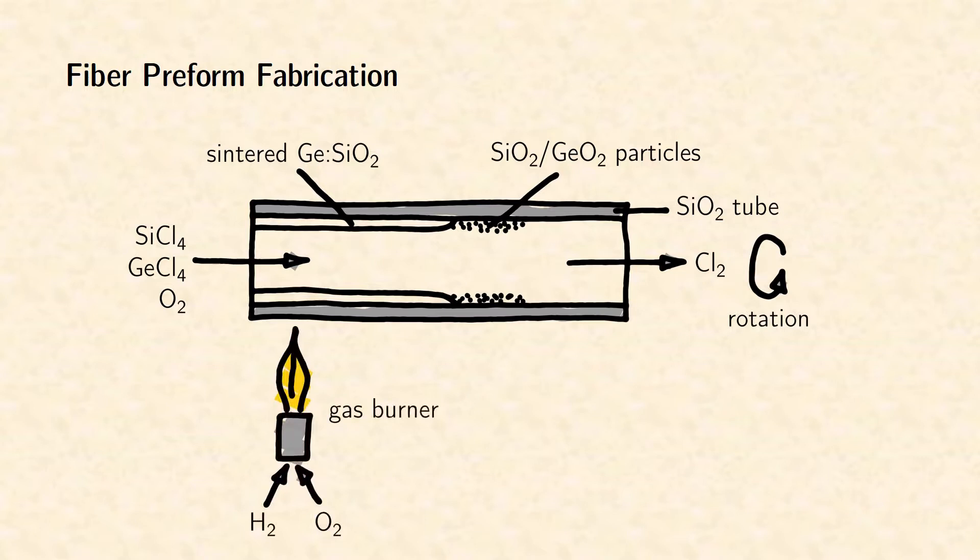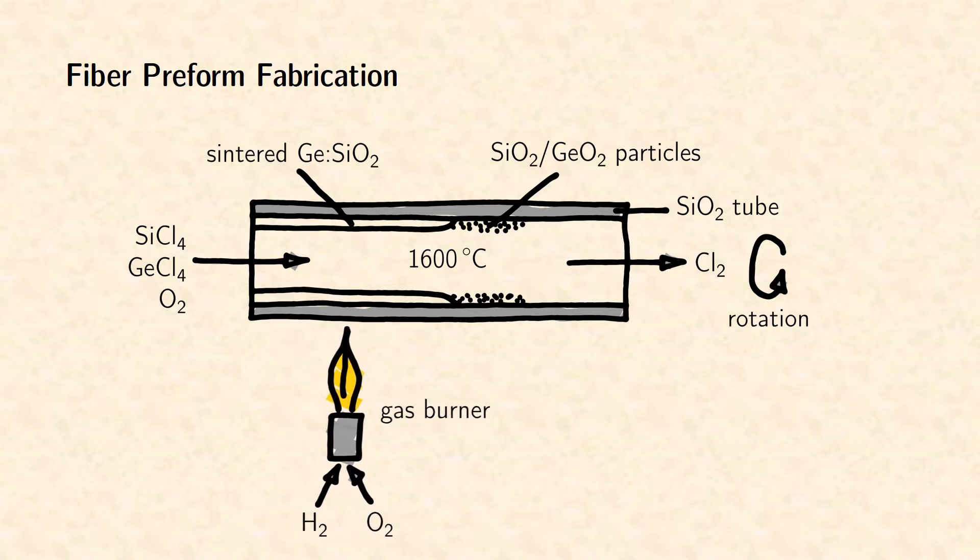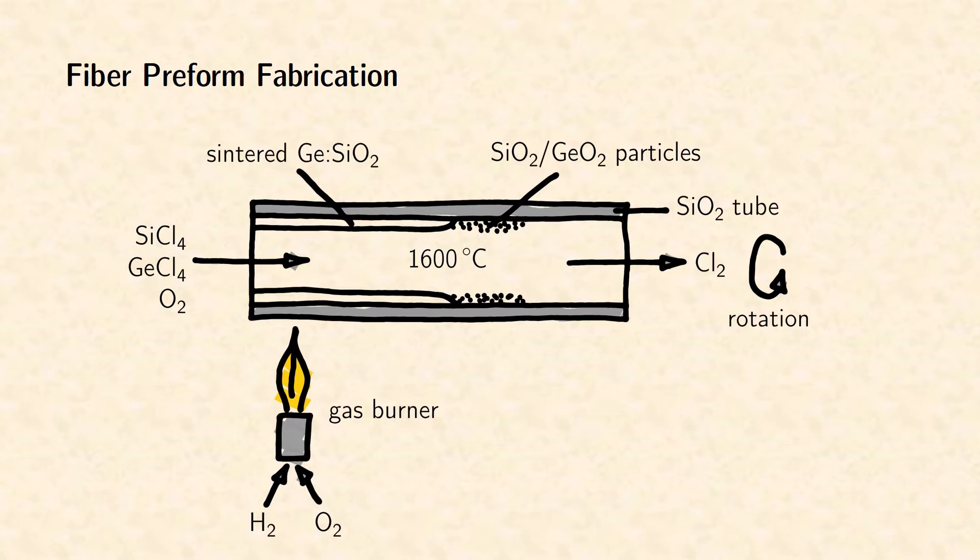A gas burner is moving forward and backward along the tube. It heats the gas to about 1600 degrees C. At this temperature, the oxygen reacts with the tetrachlorides. As a result, a powder of silica and germanium oxide condensates on the inner surface of the tube. This powder is immediately sintered in the heat of the gas burner. Each passage of the burner deposits a core glass layer of 5 to 10 micrometer.